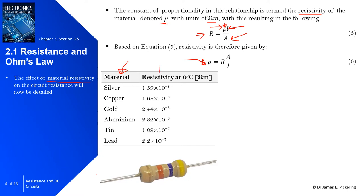As shown in the table, resistivity at 0 degrees Celsius varies across different materials. For example, if we want a component with reduced resistance, we might use gold conductors rather than lead conductors, because gold has a smaller resistivity value and will result in a smaller resistance.